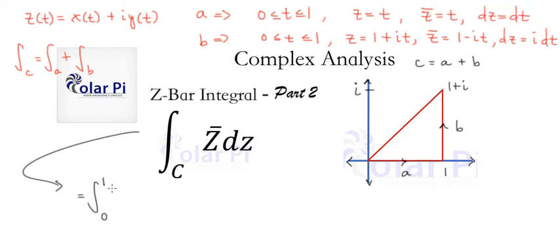So we just have tdt on a. That's it. So we're done with the integral along a, and then plus the integral along b is, again, going from 0 to 1, because we've parameterized with t again, but 0 to 1. And this time, though, z bar is 1 minus it. So we have 0 to 1 of 1 minus it, and then times dz, which is idt. So dz is idt.